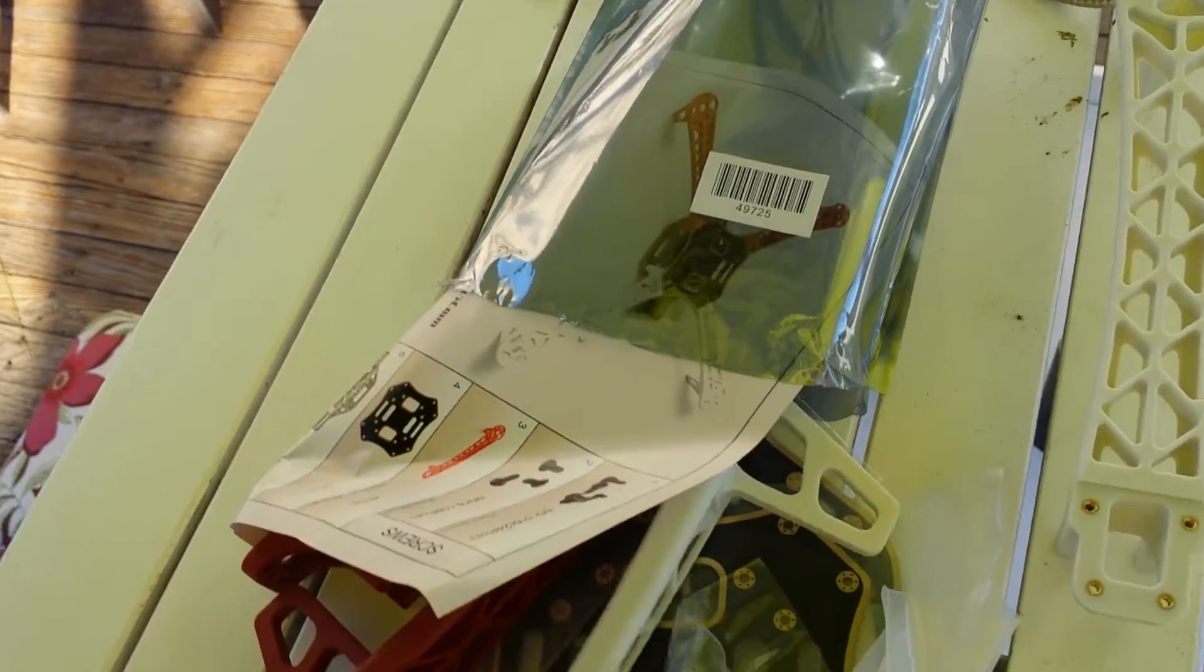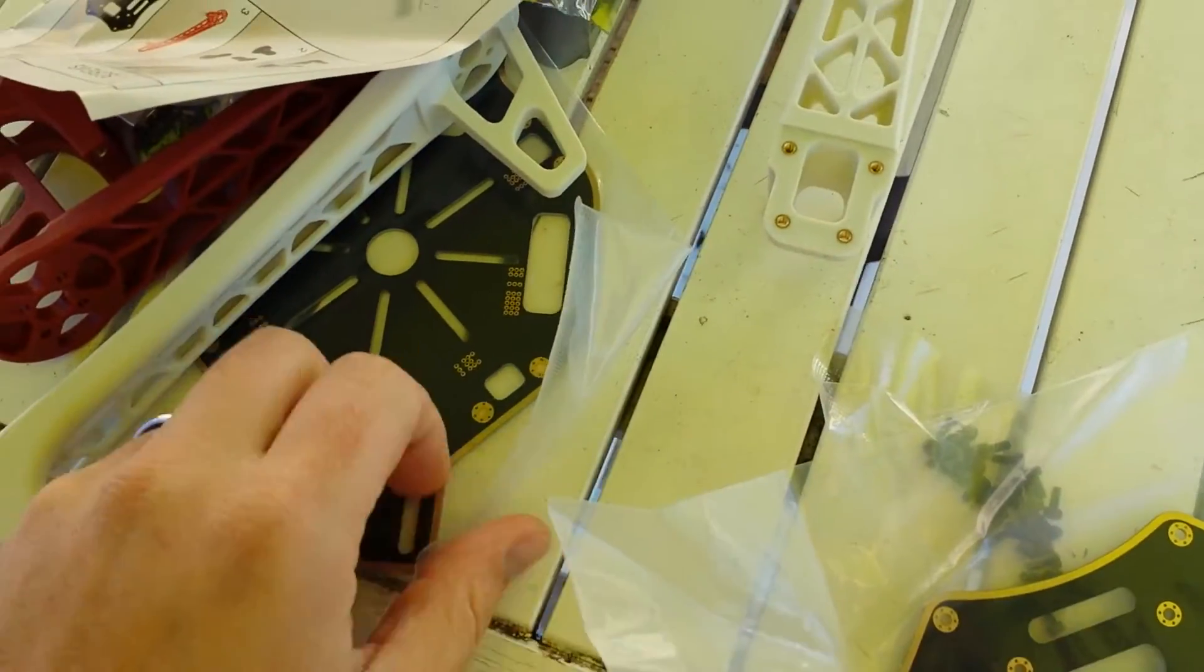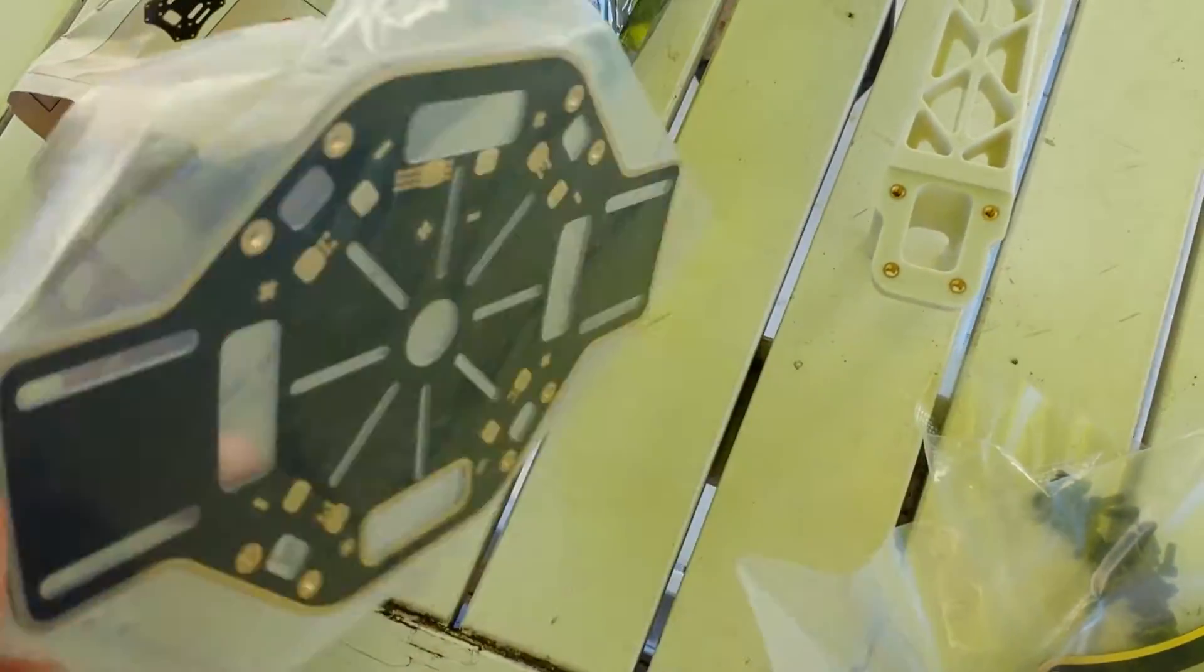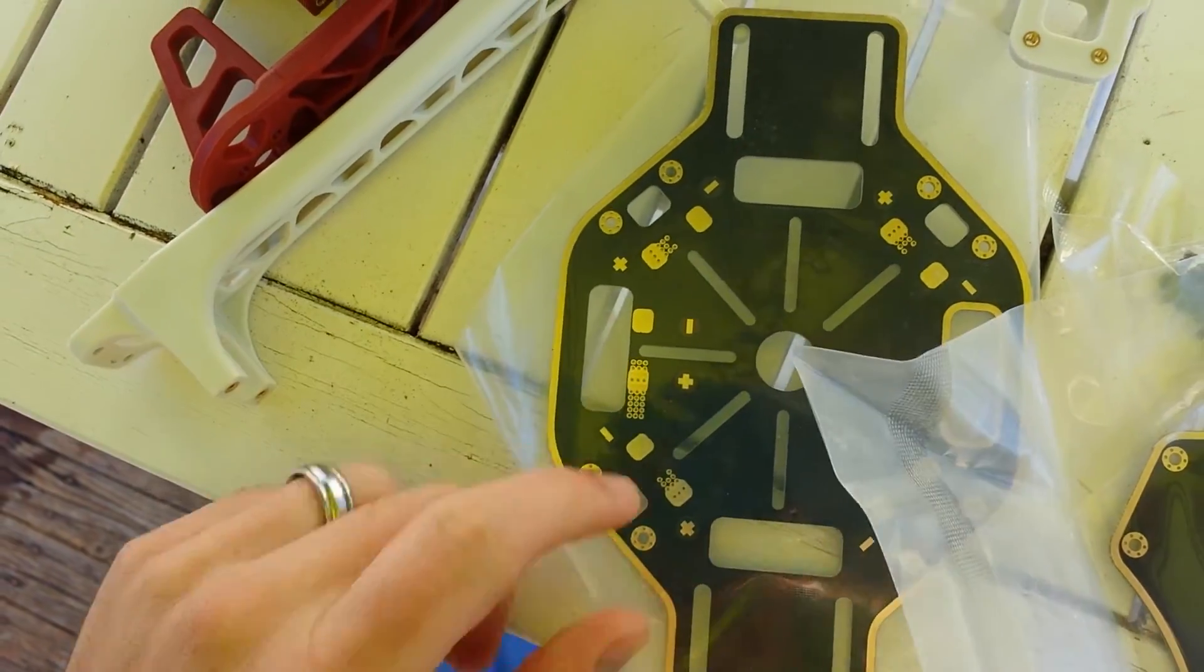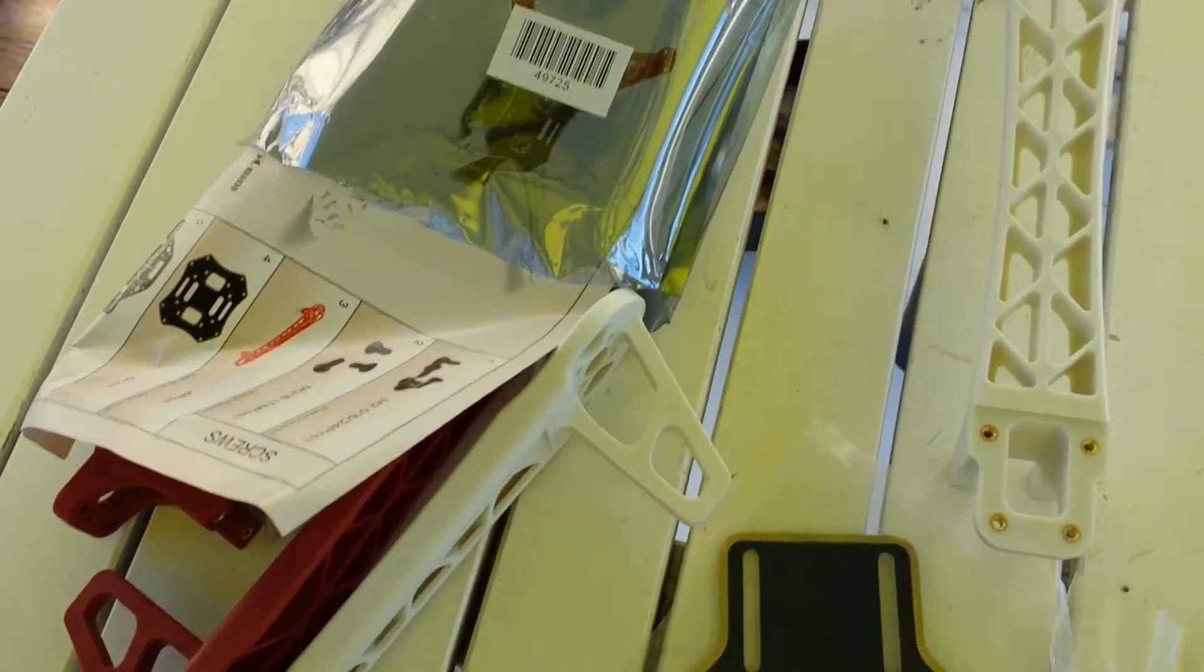But other than that, everything looks the same. The PCB boards, that's the top, here's the bottom. It's got the soldering tabs, everything's there. It's all labeled plus minus, everything looks just exactly the same.